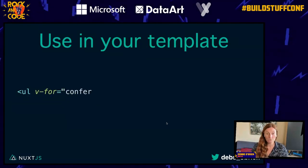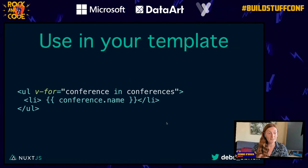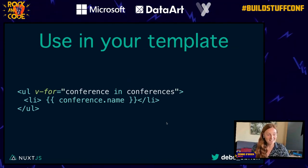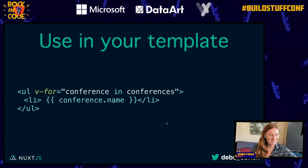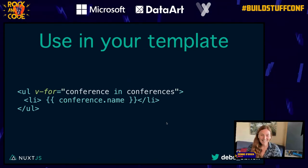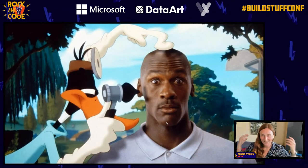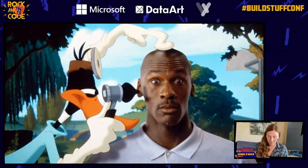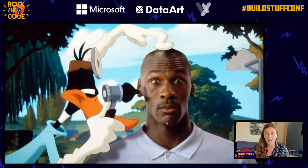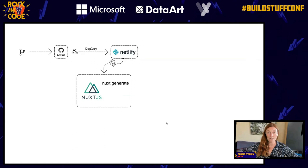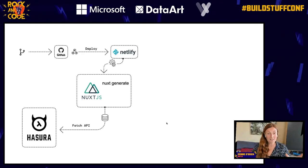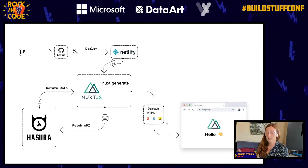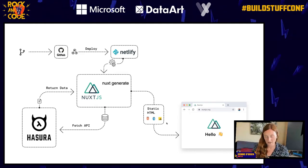Now you can use it in your template with v-for over conferences, displaying conference.name and other fields. The flow is: push to GitHub, deploy to Netlify, Netlify runs Nuxt generate, which calls the Fetch API, calls Hasura, returns the data, and renders the page as static HTML. That's what makes it super fast.